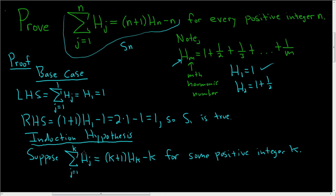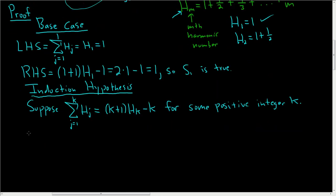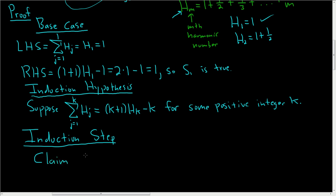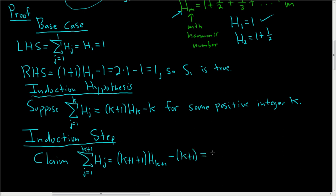In the induction step, we have to prove this is true when n equals k plus 1. We replace all n's with k plus 1 and show that statement is true. We claim the sum from j equals 1 to k plus 1 of h sub j equals (k plus 2) times h sub k plus 1 minus (k plus 1). This is what we have to prove — we replaced all k's with k plus 1, and combined 1 plus 1 to get 2.